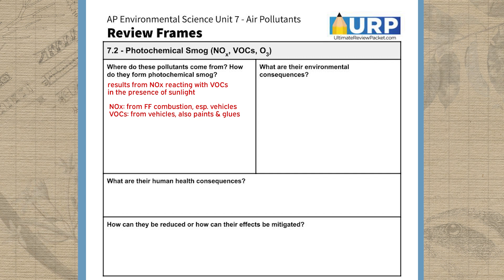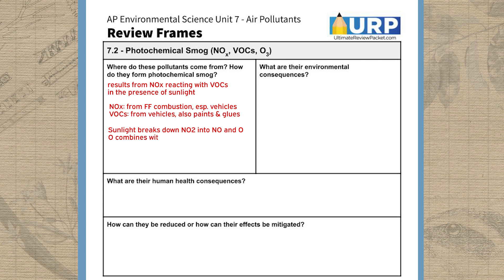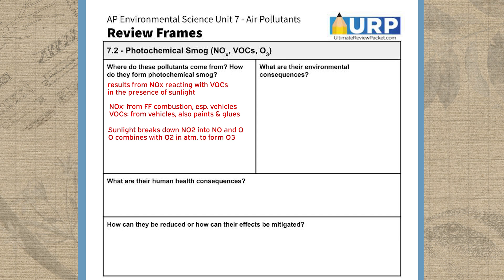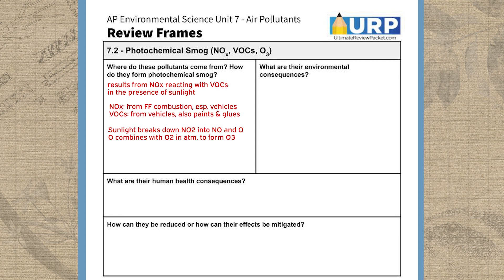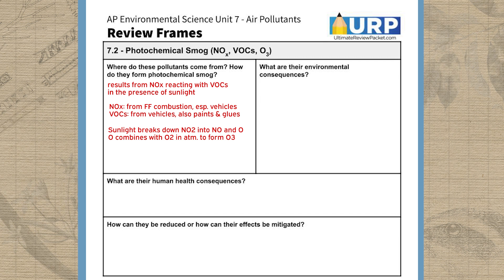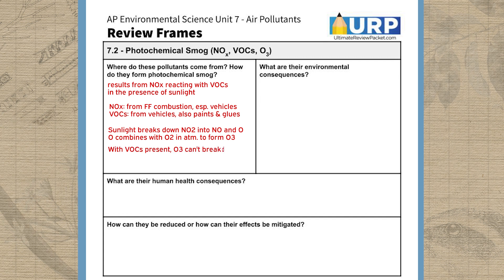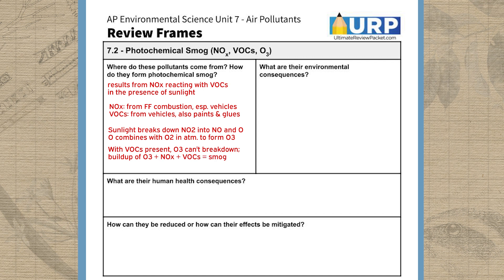Before we review the environmental consequences of photochemical smog, we should review how it actually forms from this interaction of NOx and VOX. When nitrogen dioxide is exposed to sunlight, it breaks down into nitric oxide, or NO, and a free oxygen radical. This free oxygen radical then combines with O2 in the atmosphere to form tropospheric ozone, or O3, which is one of the main components of smog. Without VOX present, this reaction reverses and prevents too much ozone from building up. But when VOX are present, they bind with nitric oxide and prevent the reversal of ozone formation, causing ozone to build up. This mixture of ozone, NOx, and VOX is collectively referred to as photochemical smog.